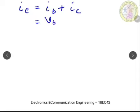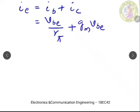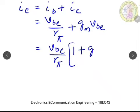IB = Vbe / Rpi, and IC = Gm × Vbe. So IE = Vbe / Rpi + Gm × Vbe = (Vbe / Rpi)(1 + Gm × Rpi). In this equation, we can replace Rpi with beta / Gm.